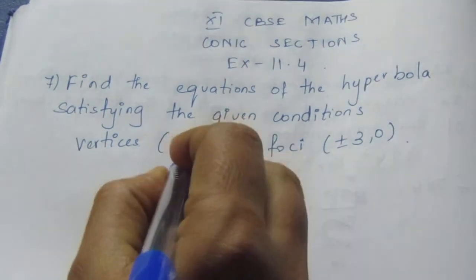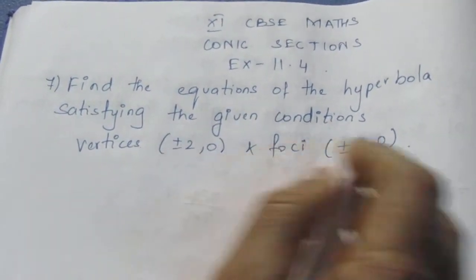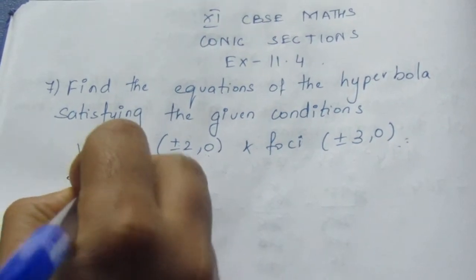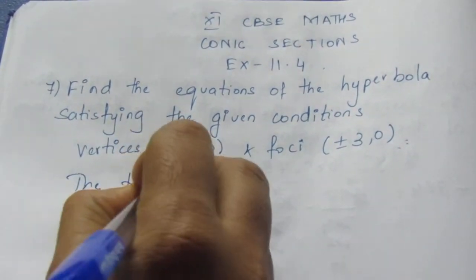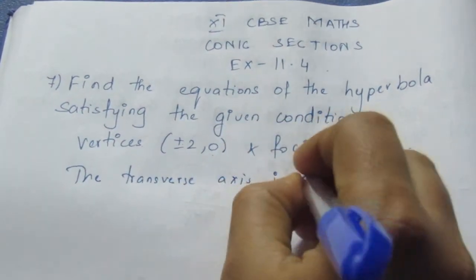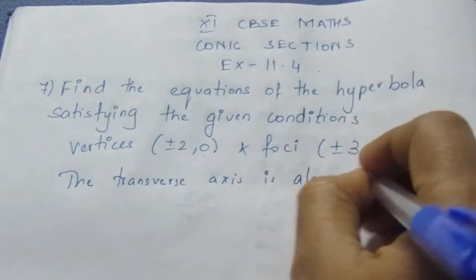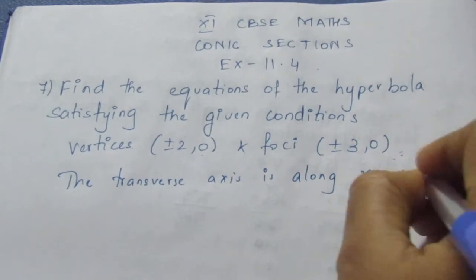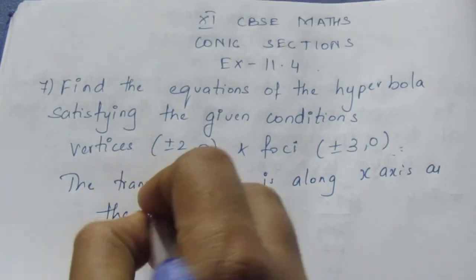Here if you see, the y-coordinate is 0. So that means the transverse axis will be along the x-axis as the y-coordinate is 0.